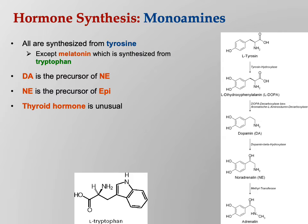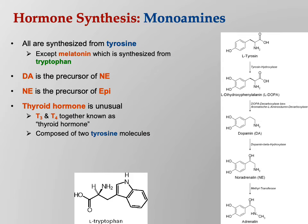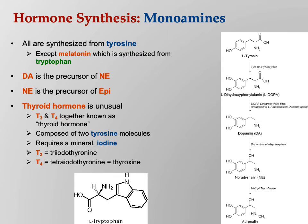Thyroid hormone is unusual — it's a peculiar hormone. T3 and T4 together are known as thyroid hormone, and I want you to know there are two different versions of it. It's composed of two molecules of tyrosine that are basically glued together, and it requires the mineral iodine. Why is one called T3? That's triiodothyronine. And the other, T4? That's tetraiodothyronine. In other words, it's just the number of iodines they have on them.